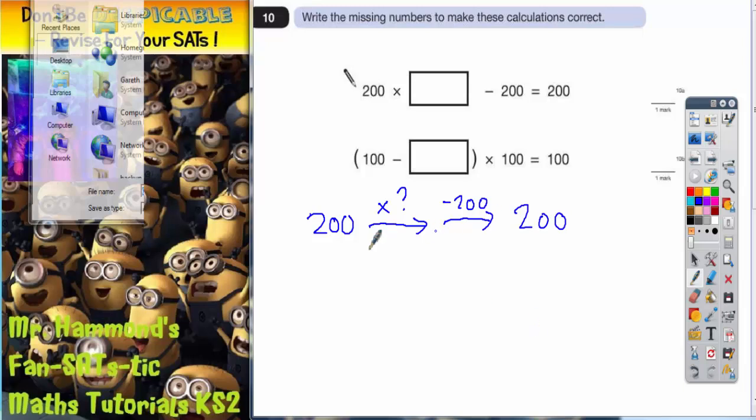So we've got these two operations going on, we're multiplying by a mystery number and we're subtracting 200. So what I'm going to do then is we're going to try and reverse these operations. So we'll try and work backwards from this 200 to get back to what this mystery number is here. The reverse of subtract 200 would be to add 200. The reverse of multiplying by a mystery number would be to divide by a mystery number. And then we would get back to this 200 here.